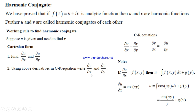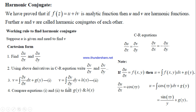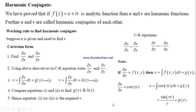We employ the same idea for finding v. We integrate ∂v/∂x with respect to x — giving integration constant g(y) — and integrate ∂v/∂y with respect to y — giving integration constant h(x). By comparing these two expressions for v, we can identify g(y) and h(x). Substituting them back gives us the required harmonic conjugate.